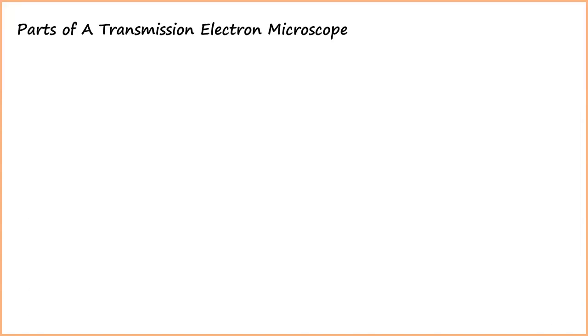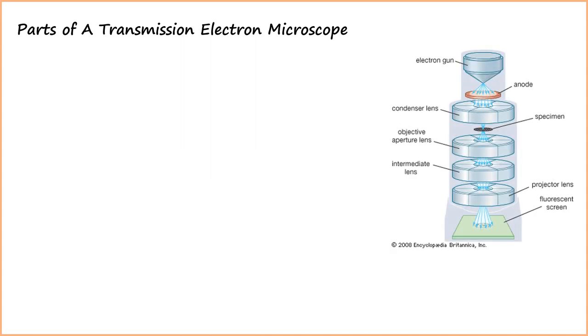Now, we will discuss the different parts of a transmission electron microscope. A TEM consists of different parts; among them, the first part is electron gun.